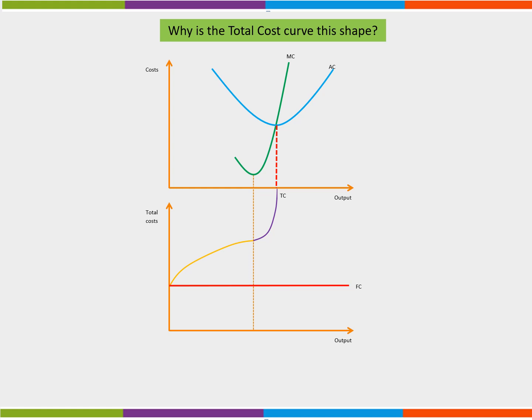At first, total cost is rising at a diminishing rate. This occurs because marginal cost is falling, as seen in the downward section of the green marginal cost curve. This equates to the purple section of the total cost curve. Here costs are rising, but at a diminishing or slower rate.